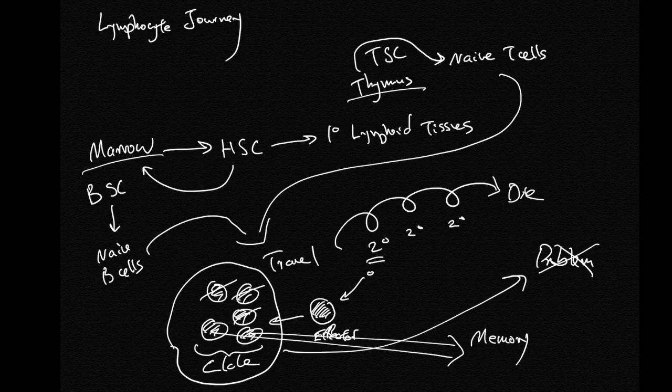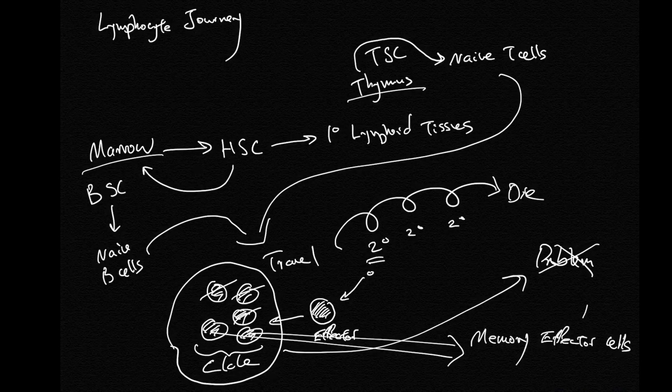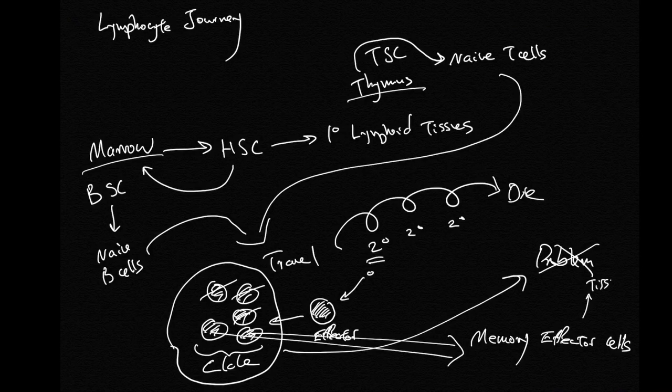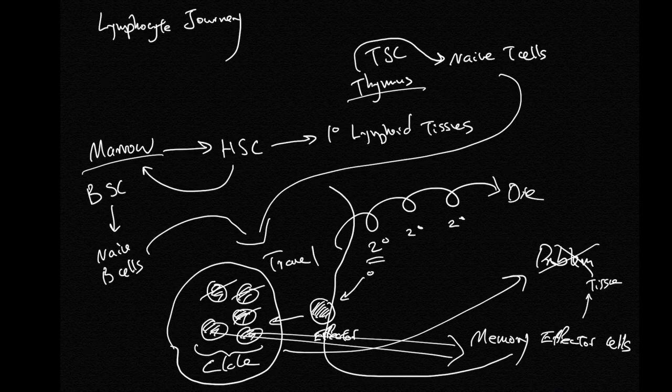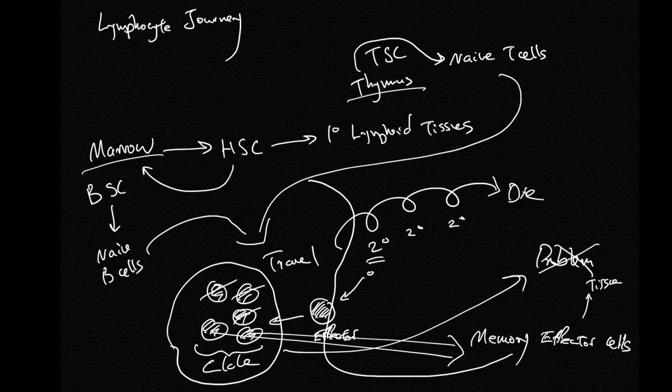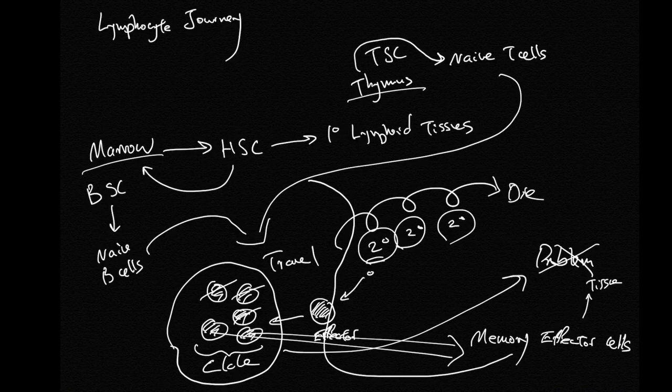They join the naive lymphocytes and travel the body, staying at secondary lymphoid tissues. So next time when the same problem comes, it's easier to find that reacting lymphocyte.